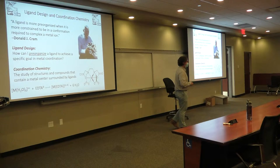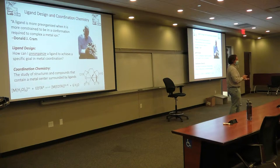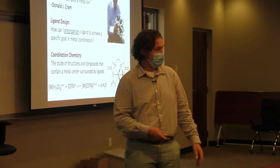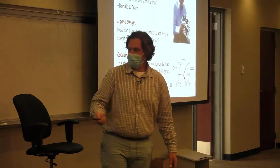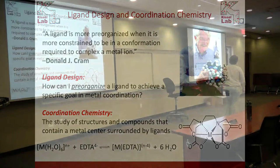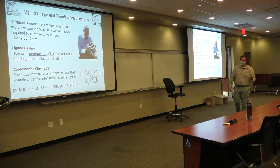He said a ligand is more pre-organized when it is more constrained to be in a conformation required to complex a metal ion. The idea of ligand design is: what tools can I use to achieve a specific function around metal coordination? One of the classic coordination compounds is EDTA, used as a preservative. EDTA is this big claw-like thing that wraps around the metal ion and is known for being a strong chelator.